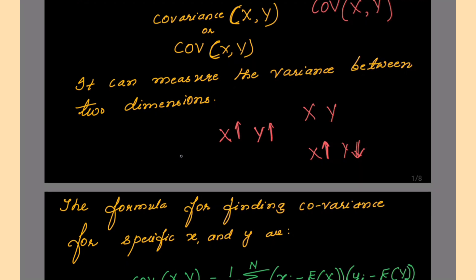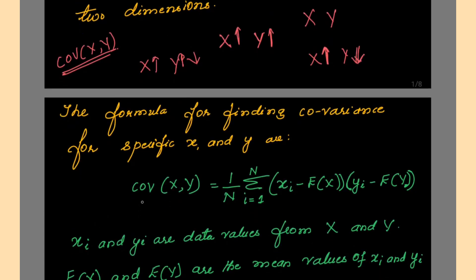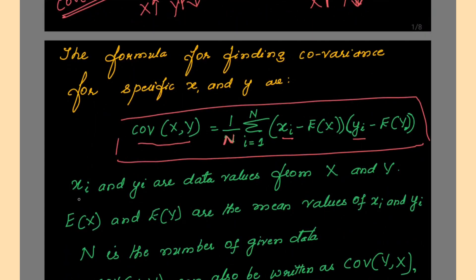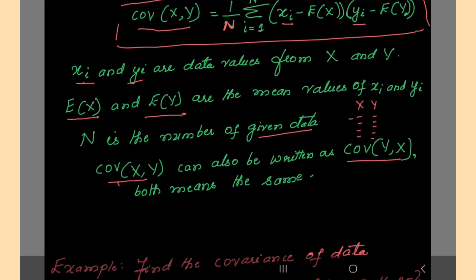Zero covariance means that changes in one variable are not associated with any consistent pattern in the other. Hence we need to find the covariance between x and y, and to find this we have a formula. The formula is: covariance of (x, y) = 1/n times the sum over all data points. Here n is the number of data points, xi and yi are the data values from x and y, E(x) and E(y) are the mean values of x and y. Note that covariance(x, y) can also be written as covariance(y, x) — both mean the same. Let us work an example on this.